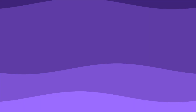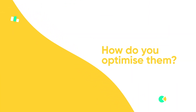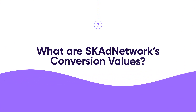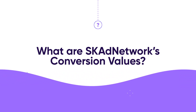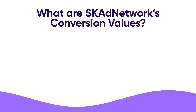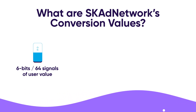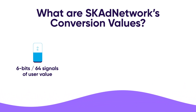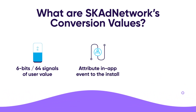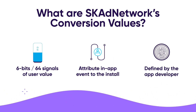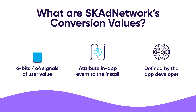In this short video, we will explain what conversion values are, how an app developer defines them, and how best to optimize them. Conversion values are how SK Ad Network enables app developers to grade the quality of users they acquire to better measure and optimize campaigns. A conversion value represents an action done by a user in an app — for example, a purchase or the completion of a level in a game. This value is then attributed to the source of the install to enable campaign measurement. The value is configured by the developer and represents a characteristic that the developer believes is a reliable indicator of the value of that user.